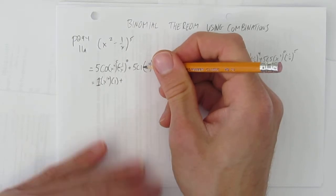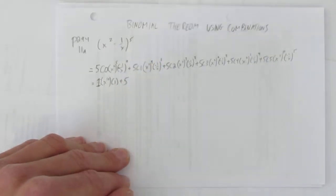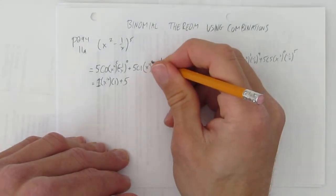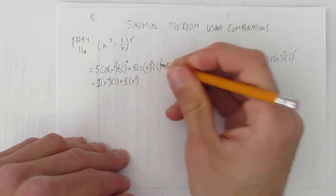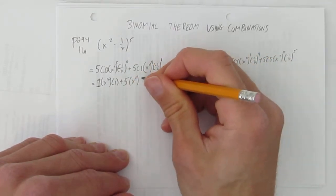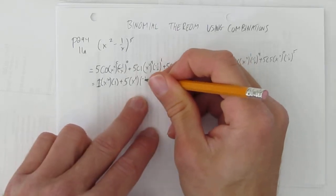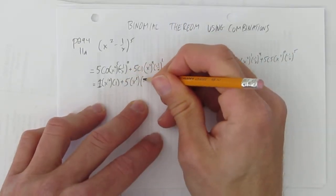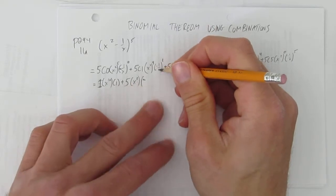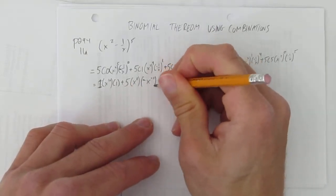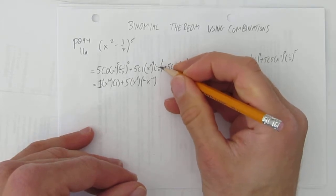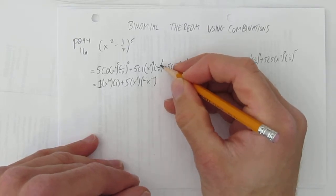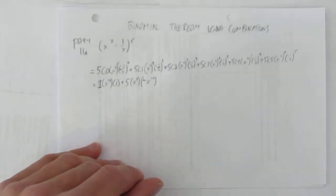Next, what's 5 choose 1? Hopefully this time you'll get it right. 5 choose 1 is 5 — if you don't believe me, check your calculator. Exponent on the exponent, multiply the exponents: 2 times 4 is 8. And then to the power of 1 on this particular one, it's negative 1 over x. But I'm going to rewrite that because it's going to be easier in a moment. Negative 1 over x is the same as negative x to the power of negative 1 — when you have an x on the bottom of a fraction, it's the same as a negative exponent. In this case it's x to the 1, so bring it up over the line and change the sign: it's x to the power of negative 1.